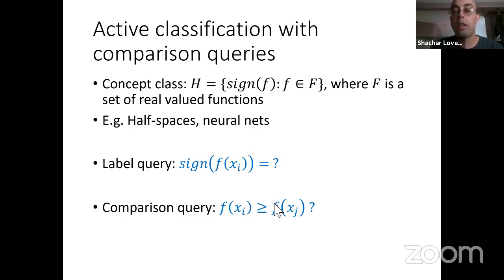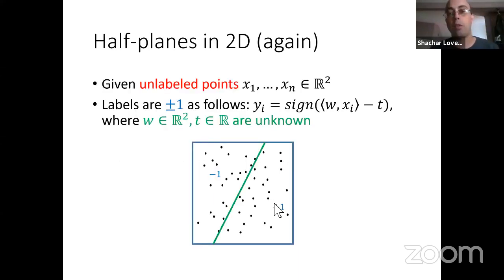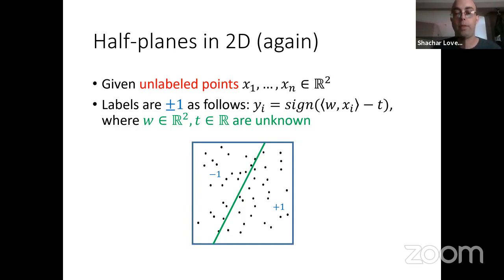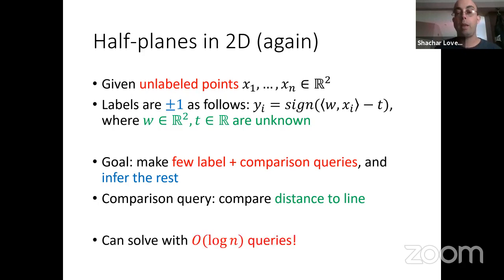Let me go back to the two-dimensional example and show why comparing two data points is actually useful. We have unlabeled points in two dimensions, there's an unknown green line — everything above is minus one, everything below is plus one. A comparison query here asks which of two points is closer to the line. I'll show how we can recover binary search in two dimensions by allowing comparison queries.